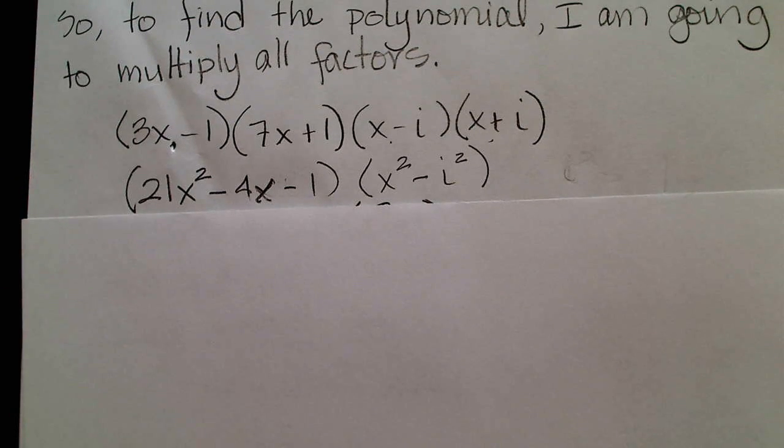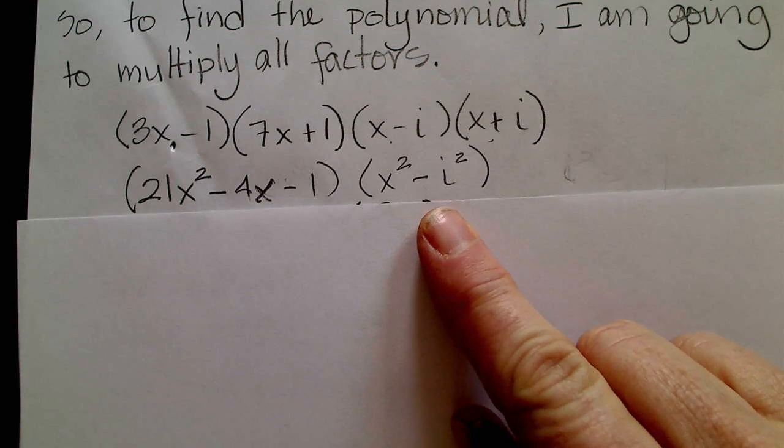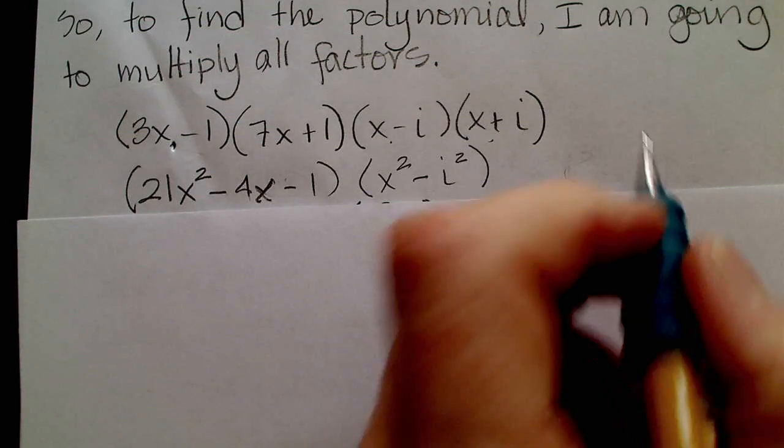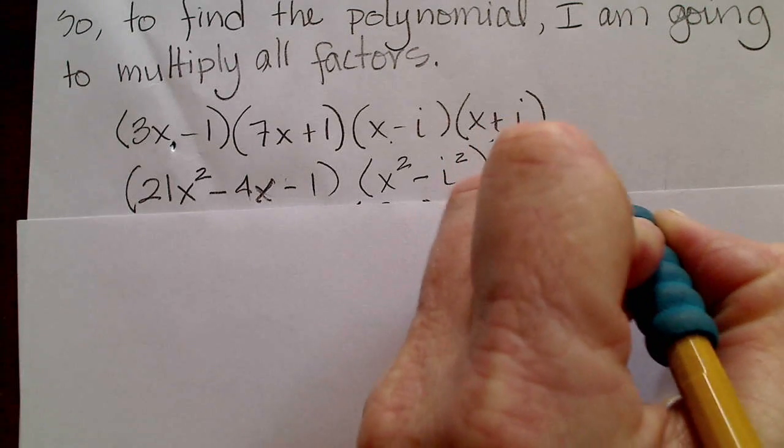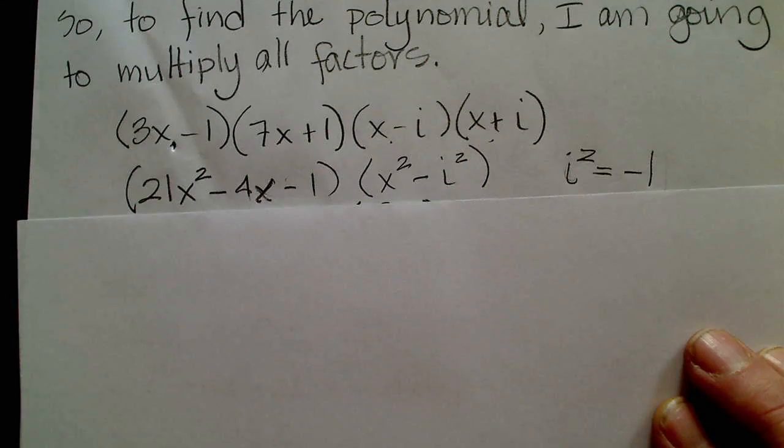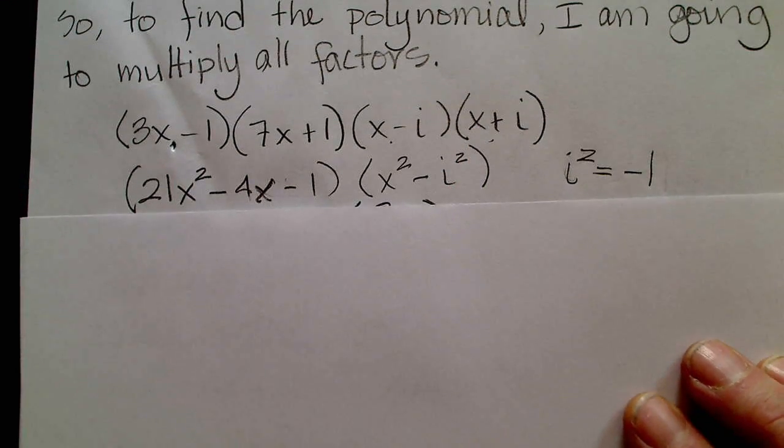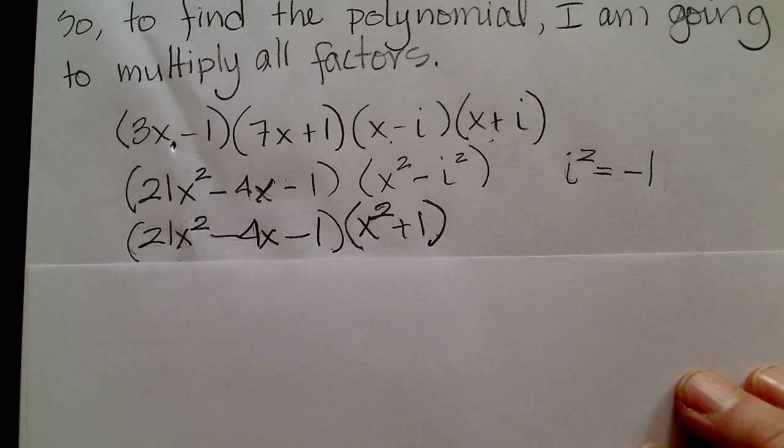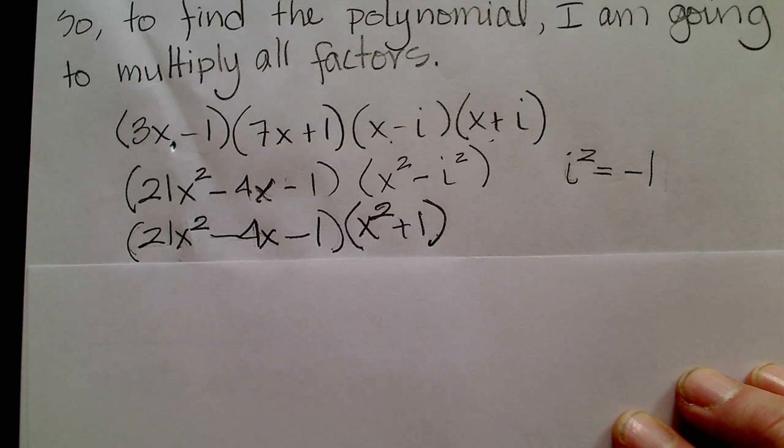And the other two become x squared minus i squared. But we know that i squared equals negative one. So I can rewrite that factor as x squared plus one.